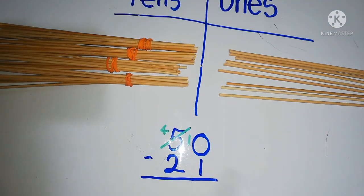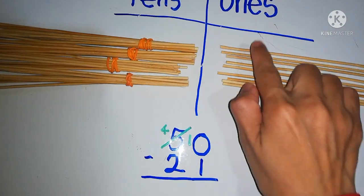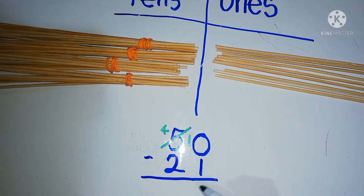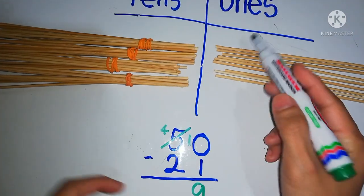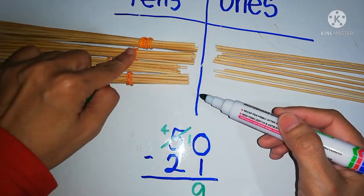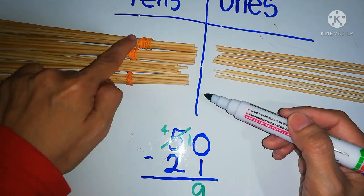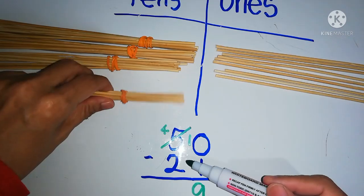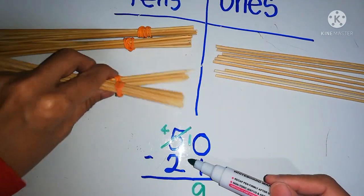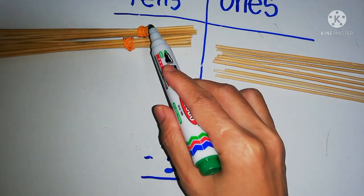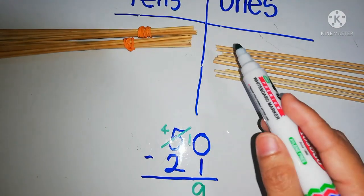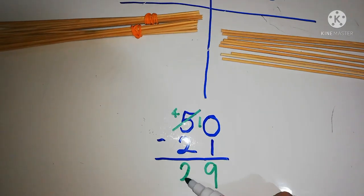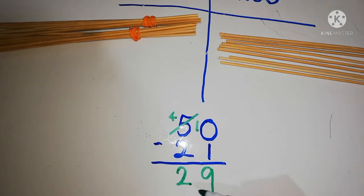So we want to take away 1. We have 2 tens from 10. So we have 4 tens here. 4 tens means 40 minus 2 tens. Take away 2 tens: 1, 2. So we have 2 tens, which is 20. Then 20 and 9, so the answer is 29.